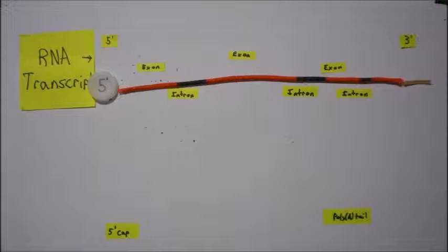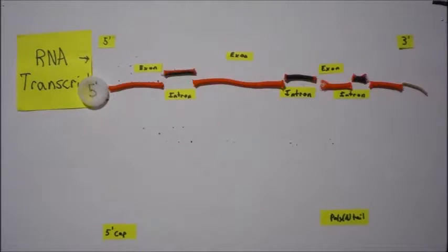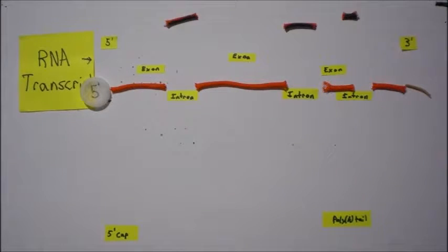The mRNA still contains introns, which are non-coding regions or more easily put as useless regions of the mRNA, while the exons are the regions that contain useful coding information. Spliceosomes remove introns and exons are joined together.